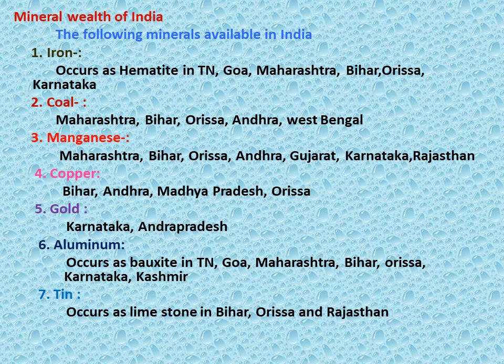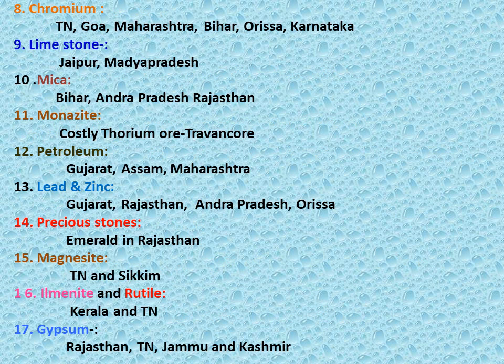Gold mines are available in Karnataka and Andhra Pradesh. Aluminium occurs as bauxite in Tamil Nadu, Goa, Maharashtra, Bihar, Odisha, Andhra, Karnataka, and Kashmir. Tin occurs in Bihar, Odisha, and Rajasthan. Chromium is found in Tamil Nadu, Goa, Maharashtra, Bihar, Odisha, Andhra, and Karnataka. Likewise, limestone, mica, monazite, petroleum, lead and zinc, precious stones, magnesite, ilmenite, rutile, and gypsum are available in various states.